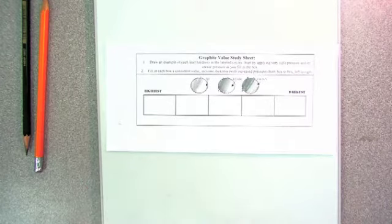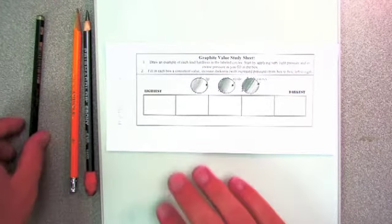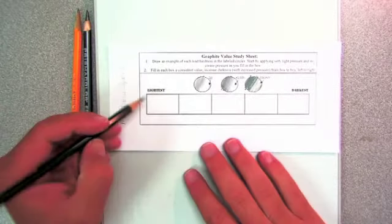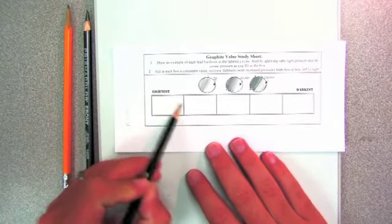So we've got five rectangles in front of you, and we're going to go lightest to darkest. So I would obviously start with the lightest pencil in the lightest area.